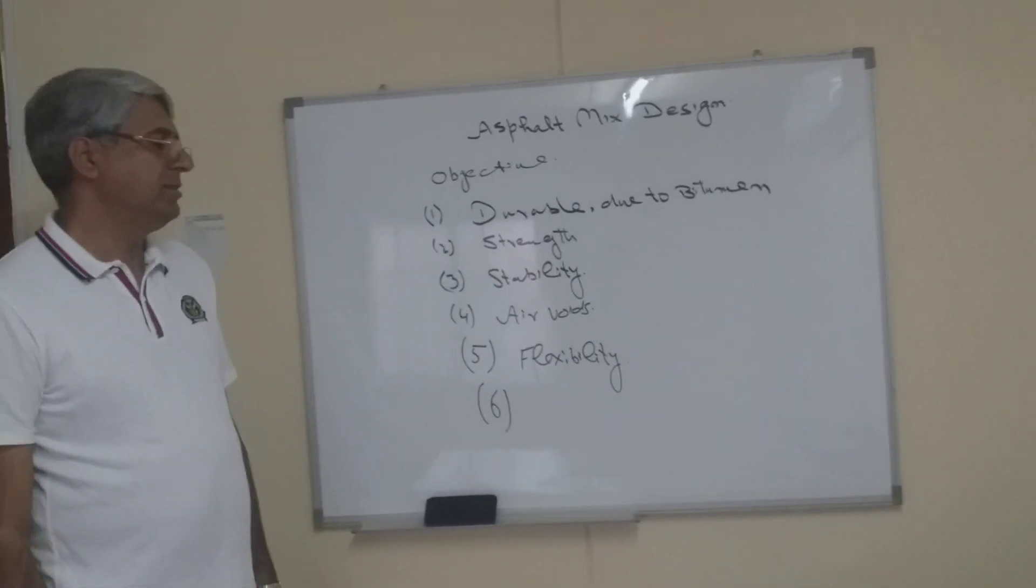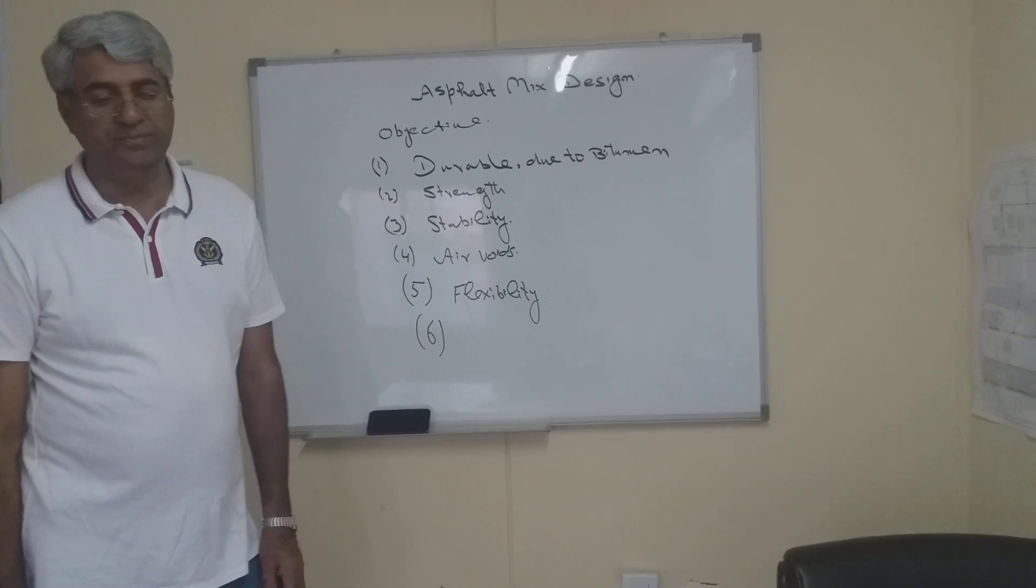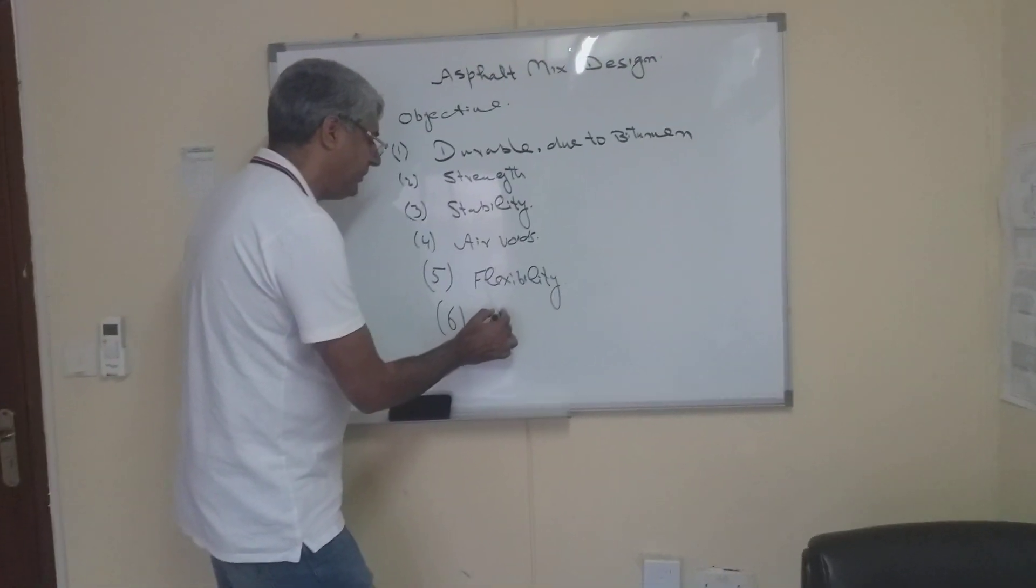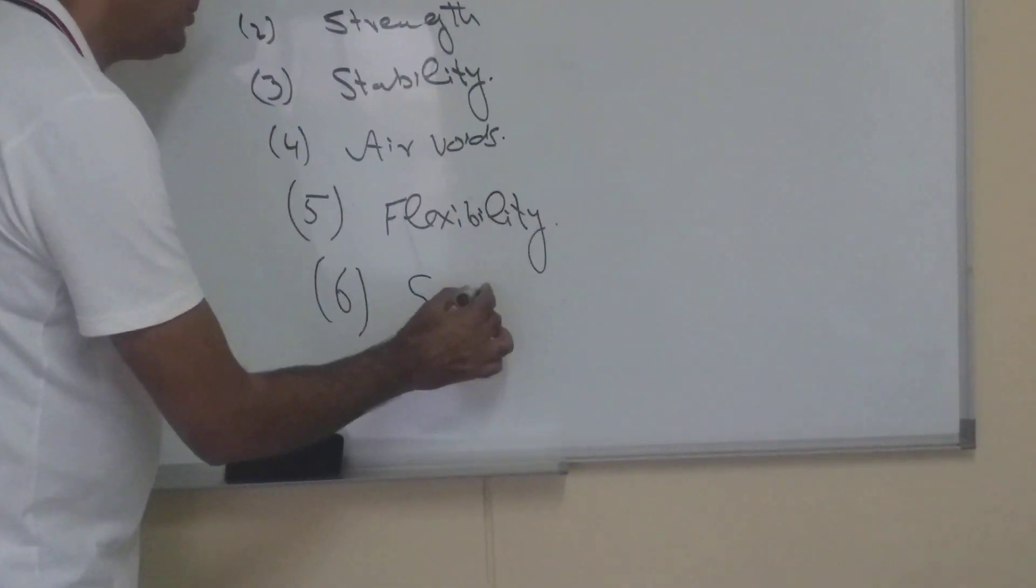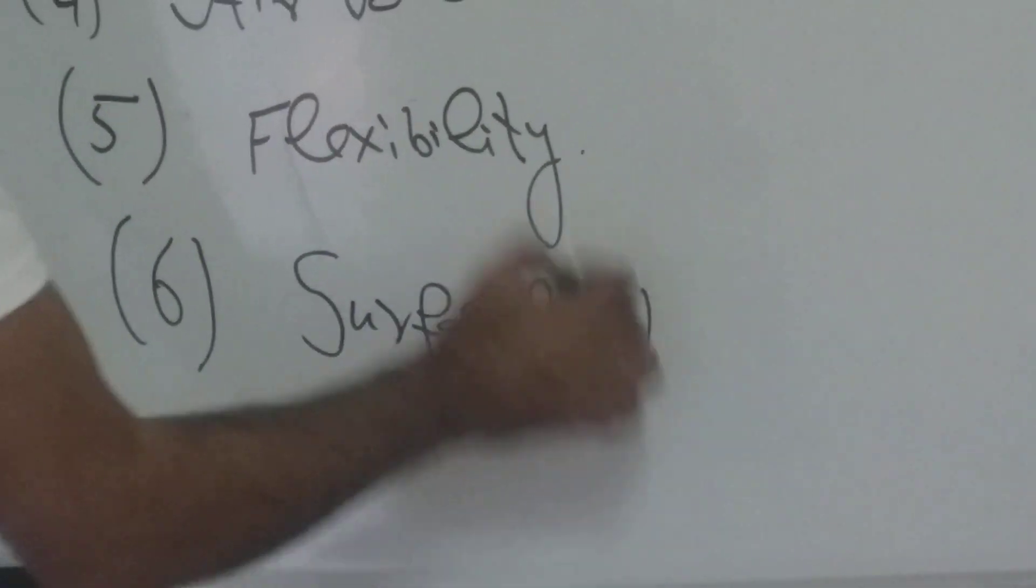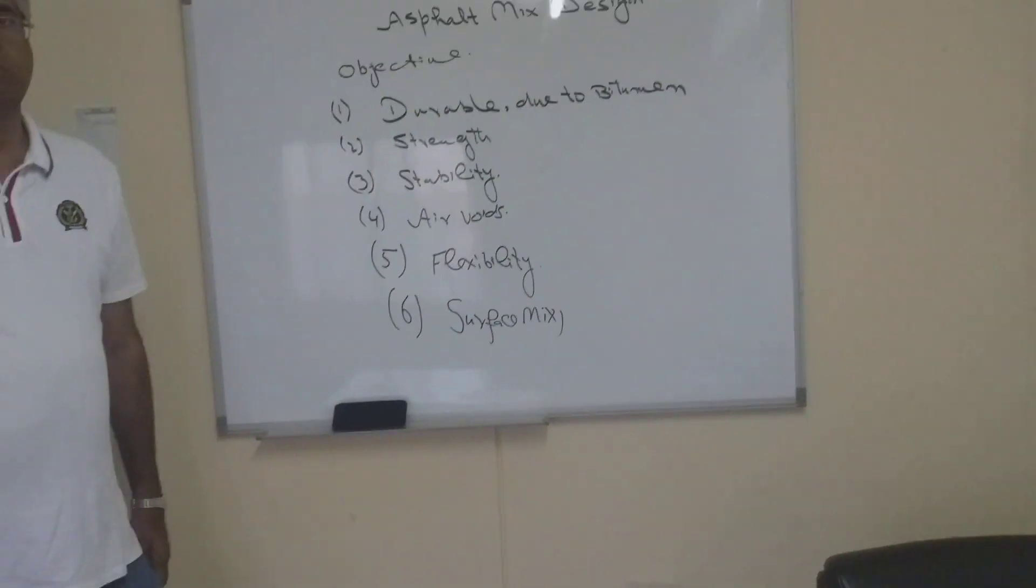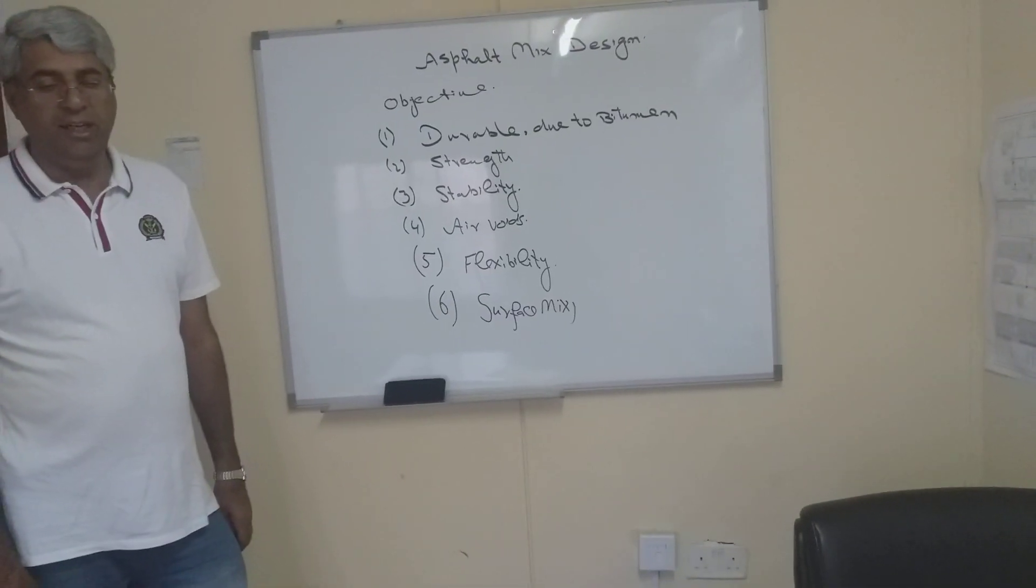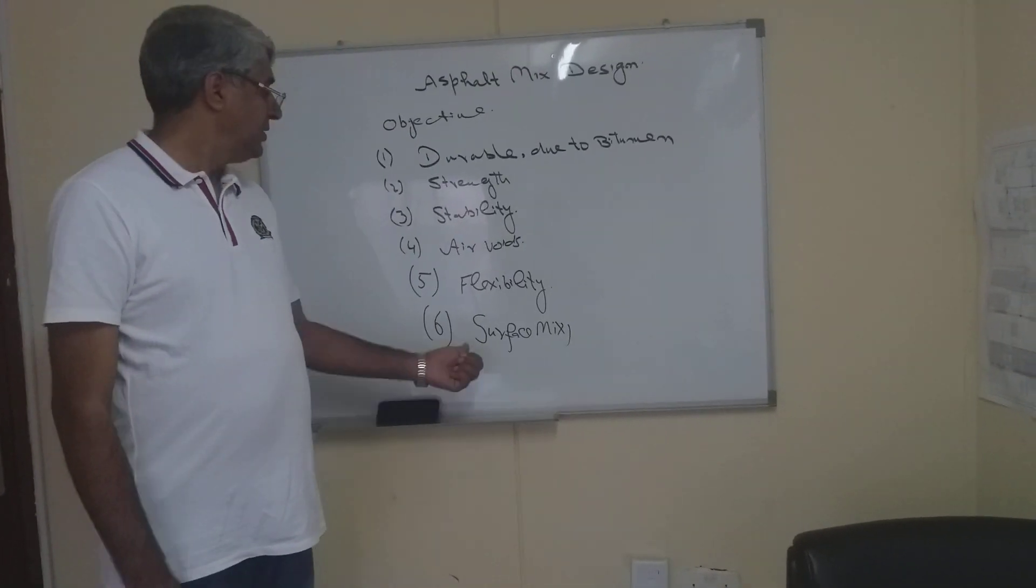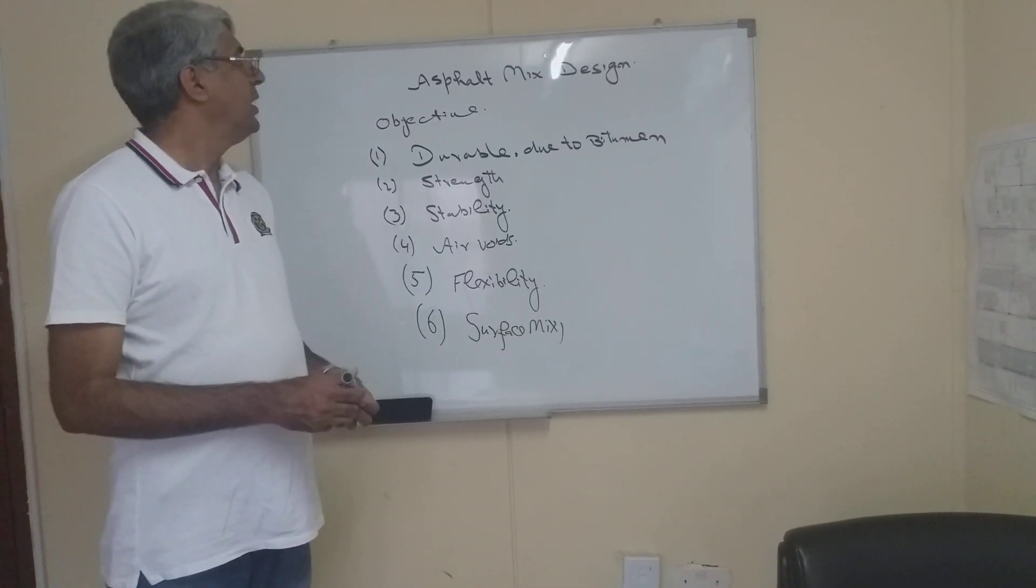Sixth one: our top surface known as the surface course or the wearing course. For the surface course, whenever we have developed the material this is known as the surface mix. You know these aggregates are used. Proper texture of aggregate required and it should be hardened enough to provide the skid resistance.